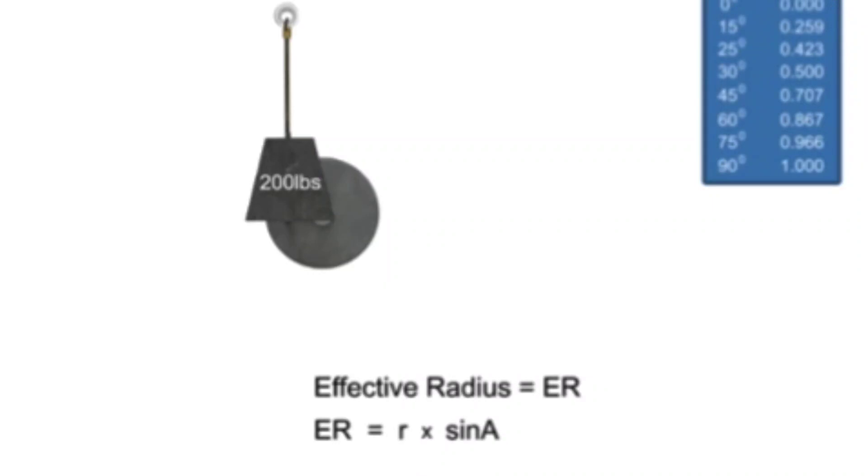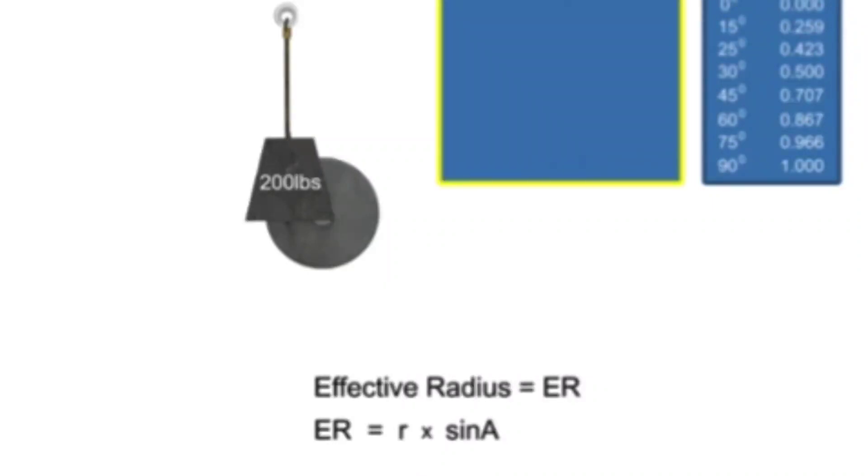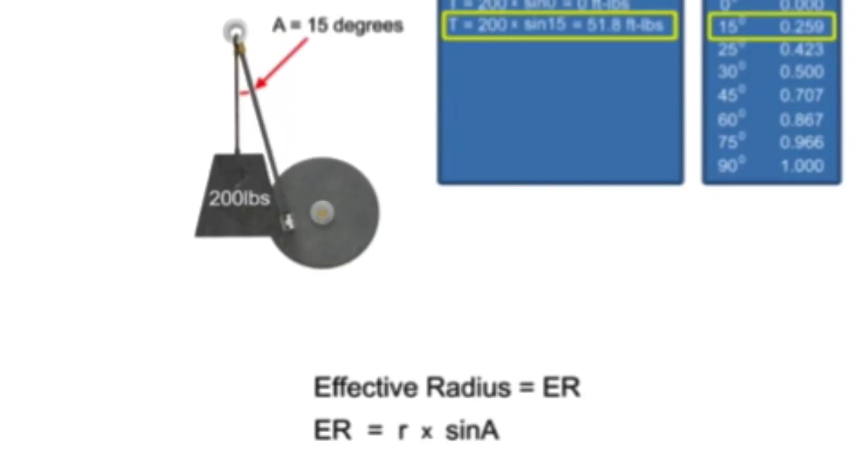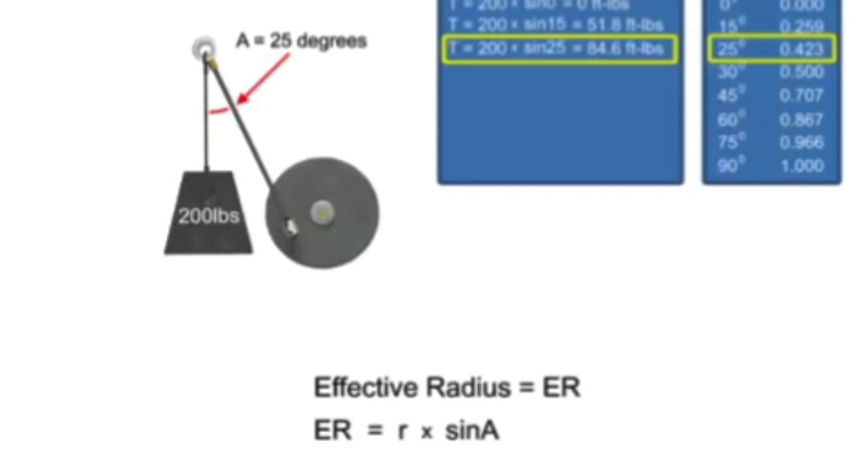Therefore, when the lever arm is vertical, the torque will be equal to 0. As the angle increases, the sine also increases, which will increase the torque.